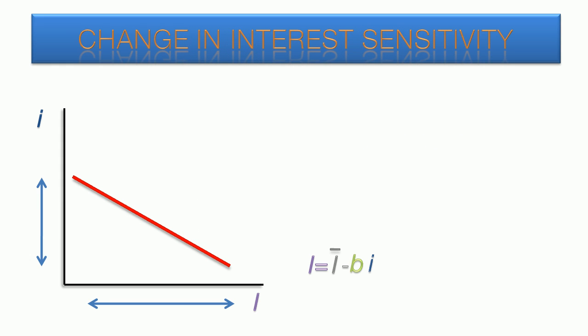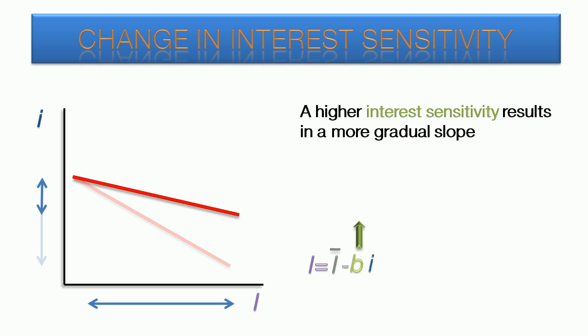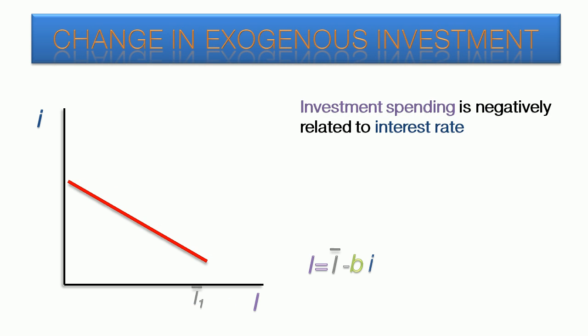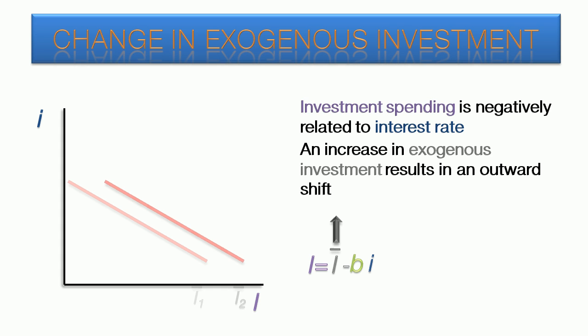The slope of the investment curve is determined by the interest sensitivity coefficient. A high investment sensitivity results in a more gradual slope. In this case, there is a drastic increase in investment spending in reaction to a relatively small reduction in the interest rate because of the higher sensitivity. The position of the curve is determined by the exogenous investment. An increase would result in an outward shift of the curve.